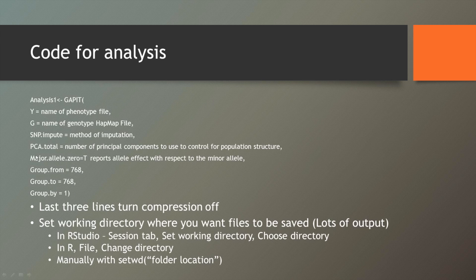So here's just the analysis. Remember that R is case sensitive, so it needs to be capital Y, G. So here we have the method of imputation, the number of PCAs we want to use. This major allele zero, again, reports the allele effect with respect to the minor allele. That will become important when you look at your minor allele effect estimates. And these three lines here, this actually turns off compression. It just basically says treat each line as its own individual line and don't try and group them. And then finally, make sure you set the working directory where you want the files to be saved.